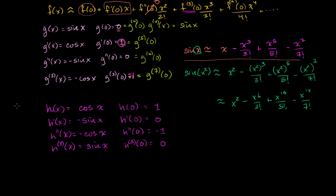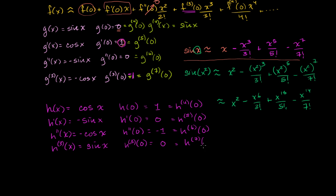The fourth derivative of h is cosine of x again, so the fourth derivative at 0 is 1 — the same as the function evaluated at 0. The fifth derivative at 0 is 0, the sixth derivative at 0 is negative 1, and the seventh derivative at 0 is 0. That's enough — we definitely have four non-zero terms identified.